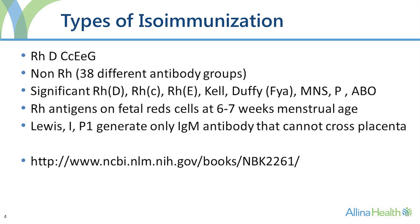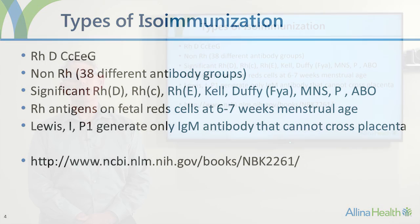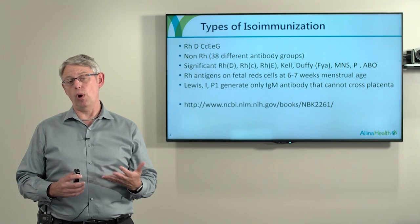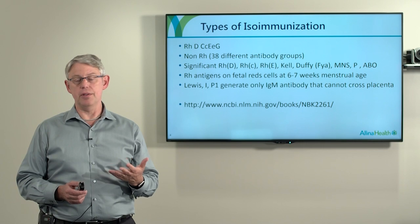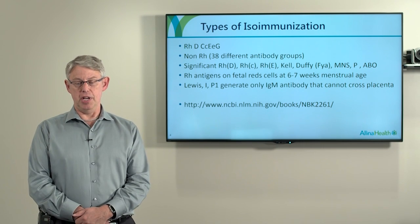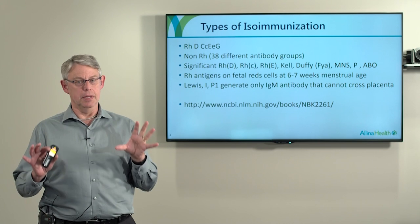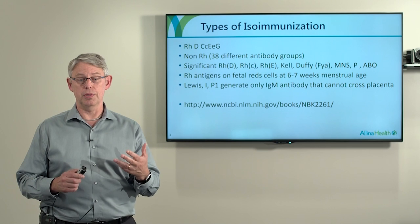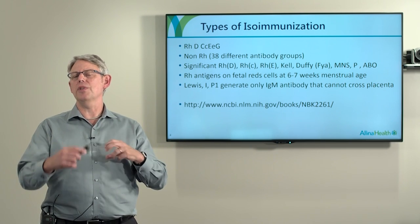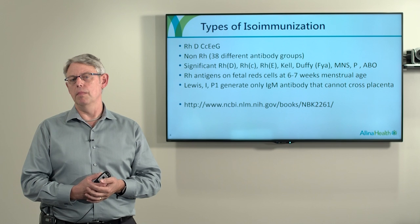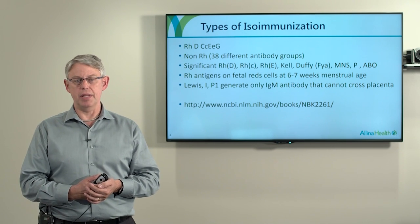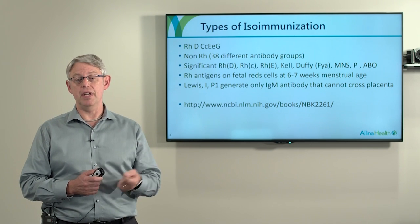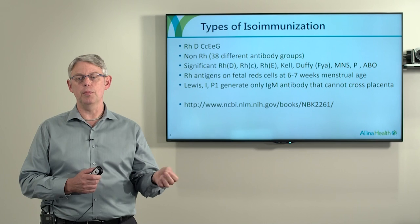There are different types of isoimmunization. The one that most people know is RH — RH positive, RH negative. The RH system actually consists of four antigens: D (there's no little d), the C's, the E's, and G. But there are many other antibodies that can develop in pregnant women, at least 38 different groups. Only certain ones are more significant in terms of potentially causing isoimmunization in pregnancies. These are big D, small c, big E, KEL, Duffy, some from the MNS group, the P group, and the ABO group.